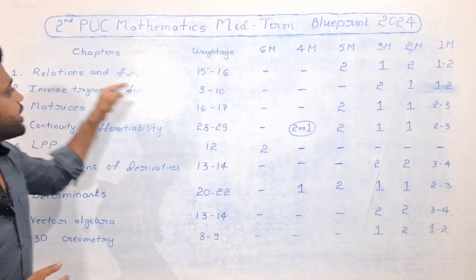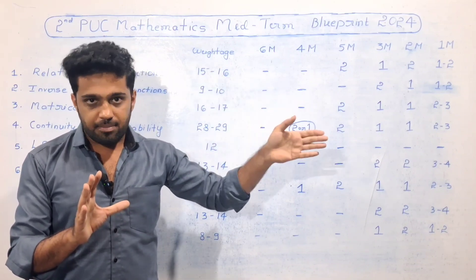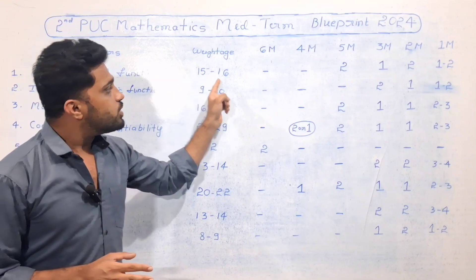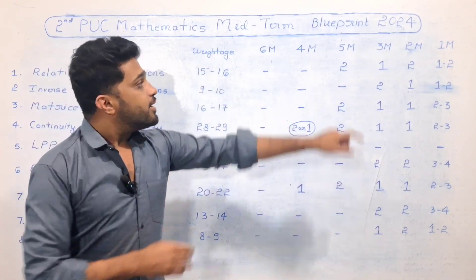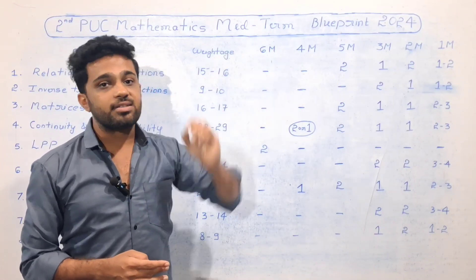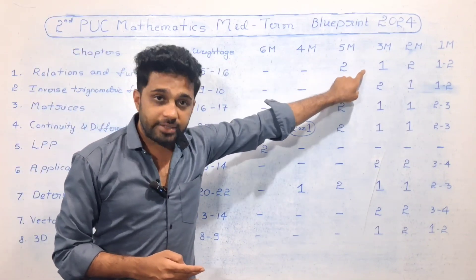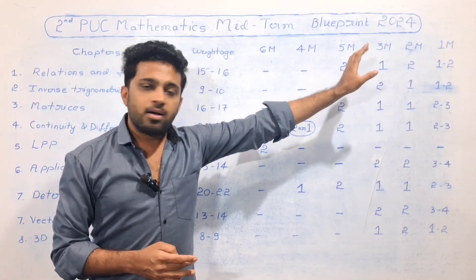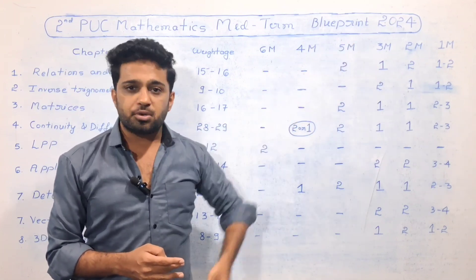Relations and Functions: In this chapter, in every district's mid-term exam, there are 15 to 16 marks allotted. There are 5-mark questions in this chapter — two such questions. There are also multiple choice questions, with two questions from this chapter.